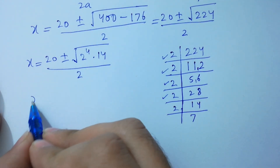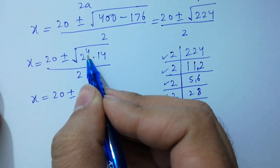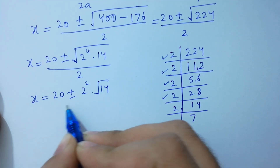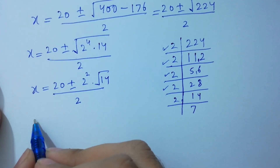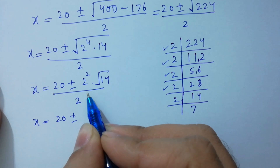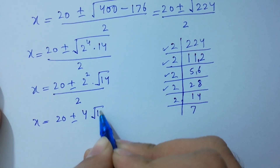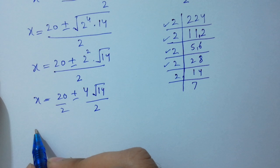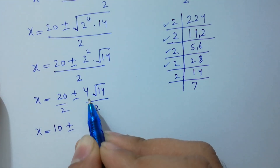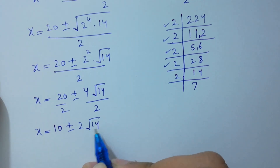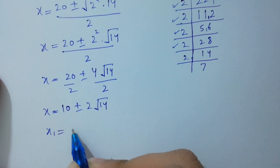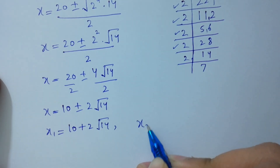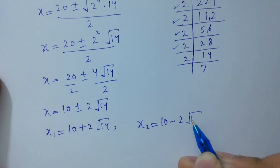Taking the square root: square root of 2 to the power 4 is 2 squared, which equals 4. So x equals 20 plus or minus 4 times square root of 14, over 2. Simplifying: 20 over 2 is 10, and 4 over 2 is 2. Therefore x equals 10 plus or minus 2 square root of 14. So x1 equals 10 plus 2 square root of 14, and x2 equals 10 minus 2 square root of 14.